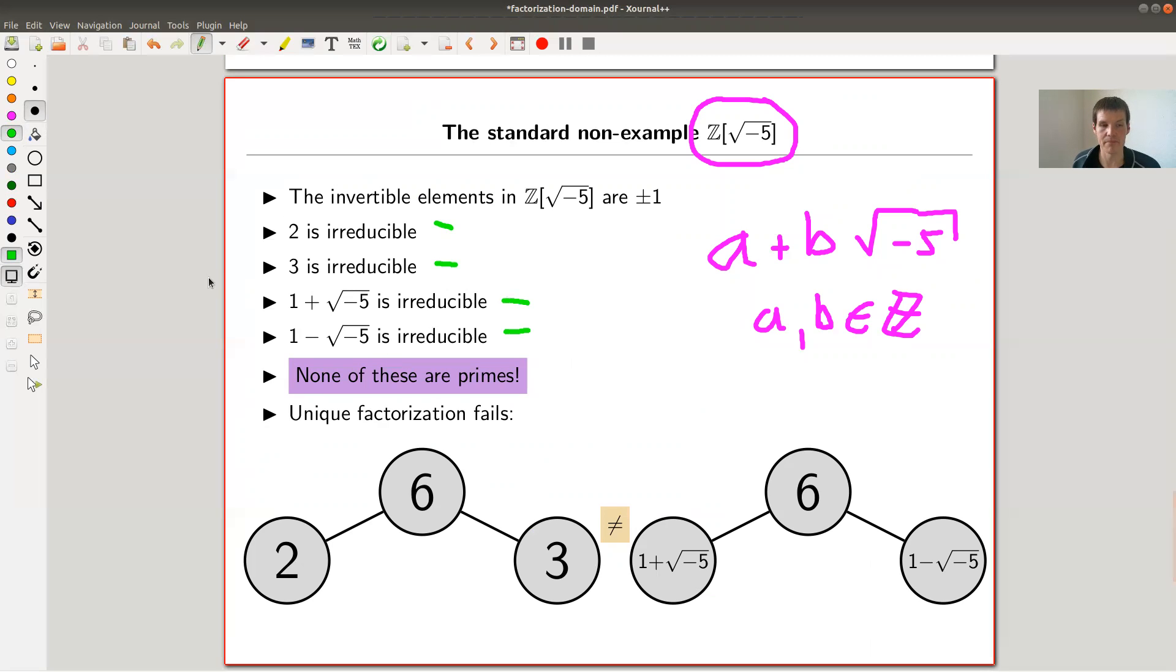And it's pretty easy, it's not hard, but it's not obvious but it's also not hard to check the 2 is irreducible, 3 is irreducible, this guy's irreducible and this guy's irreducible: one plus square root of minus five, one minus square root of minus five. But they are not primes because unique factorization actually fails. So 6 is, of course, 2 times 3. I think that sounds believable, but 6 is also one plus square root of minus five times one minus square root of minus five.